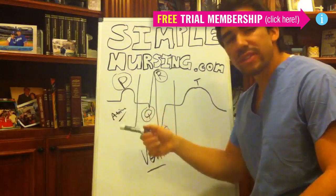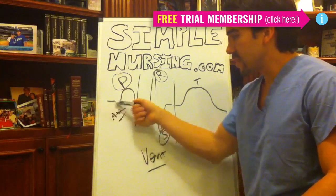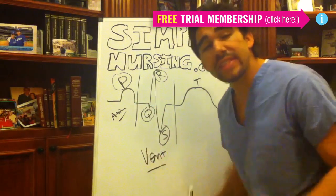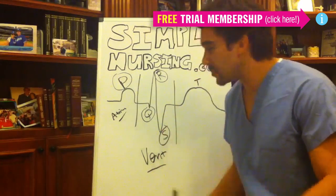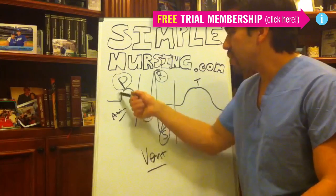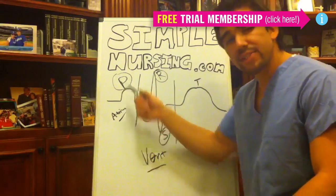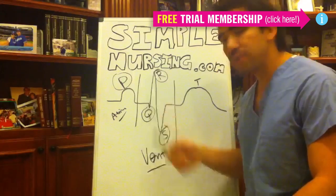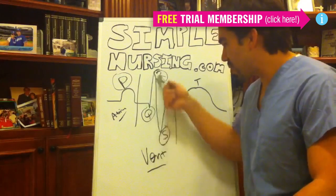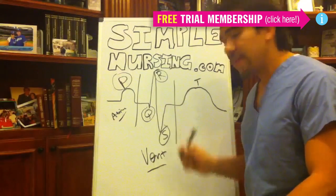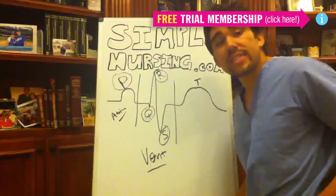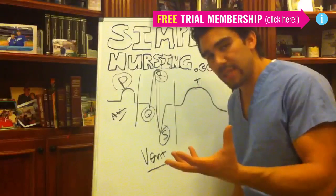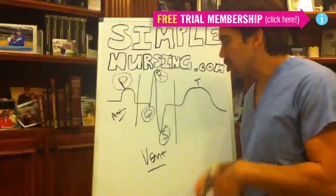That isoelectric line is that part where nothing's happening in the heart — nothing's contracting. Atriums contract, that's your P wave. Ventricles contract, that's your QRS wave. Last one is that T wave — that repolarization.